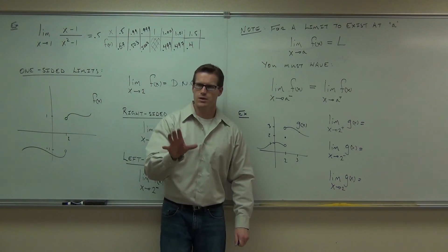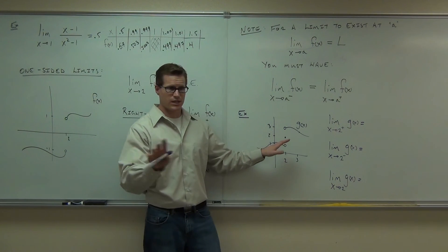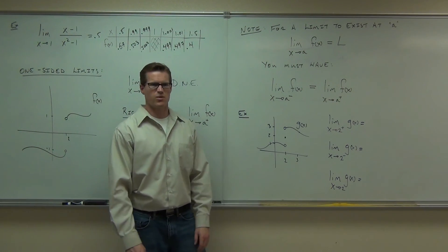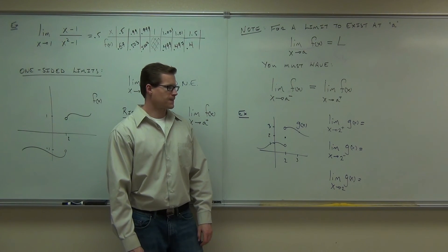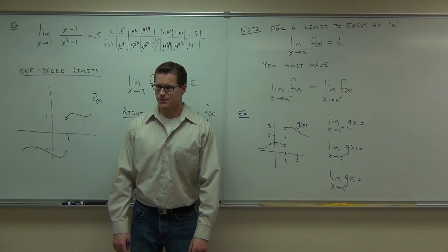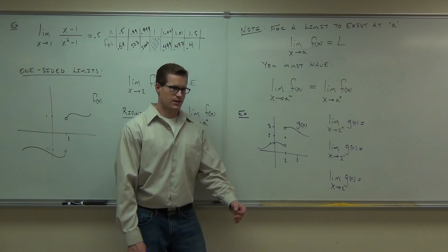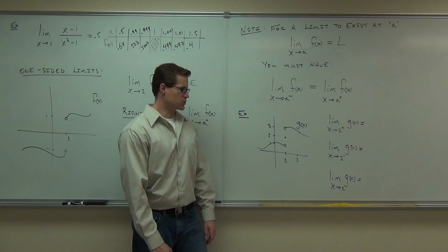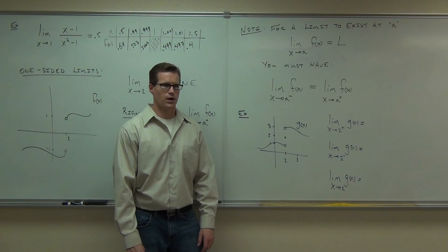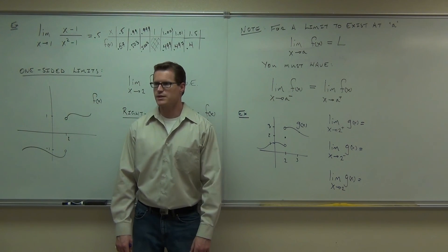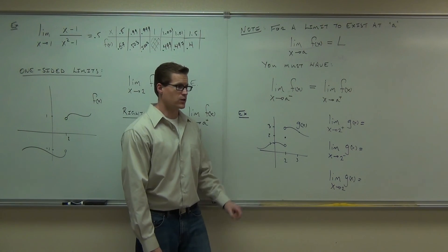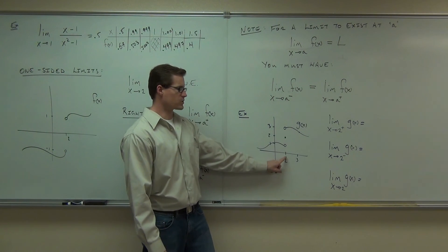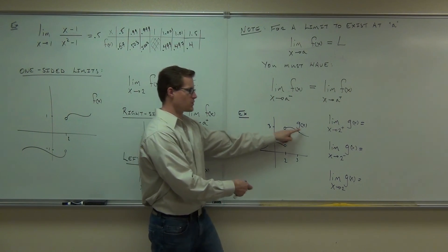Can you determine on your own the limit of g of x as x approaches 2 from the right? In English, the question asks: what is the y value when x gets really close to 2 from the right? What's happening? As I'm getting close to the value 2 along x, the y is getting close to 3. So this limit from the right is 3.